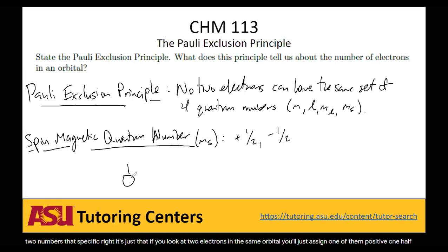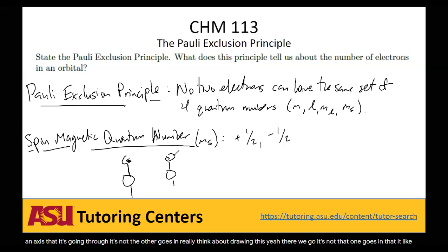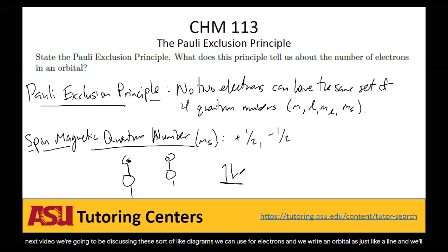There's nothing really between those two values — it's just that if you look at two electrons in the same orbital, you assign one positive one-half and one negative one-half for their spins. They're not literally spinning clockwise versus counterclockwise, but that is often how we think about them. In the next video we'll discuss diagrams where we write an orbital as a line and draw one electron arrow pointing up and one pointing down to represent the two different spins.